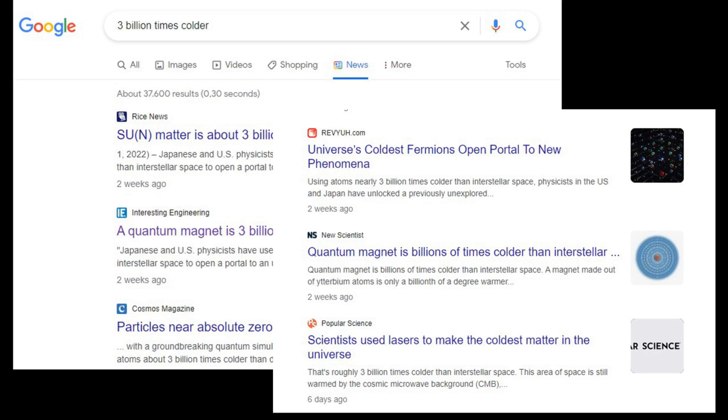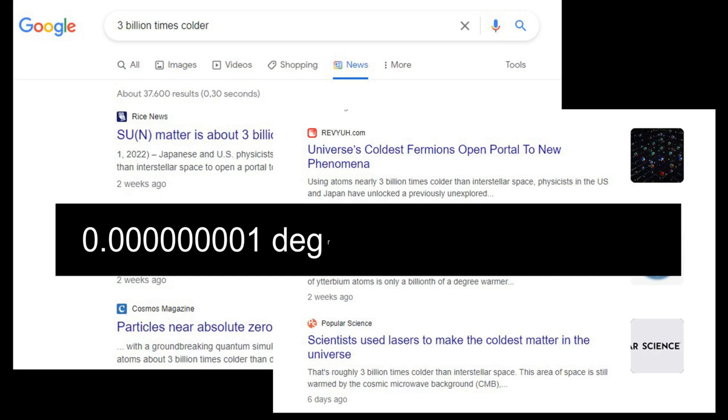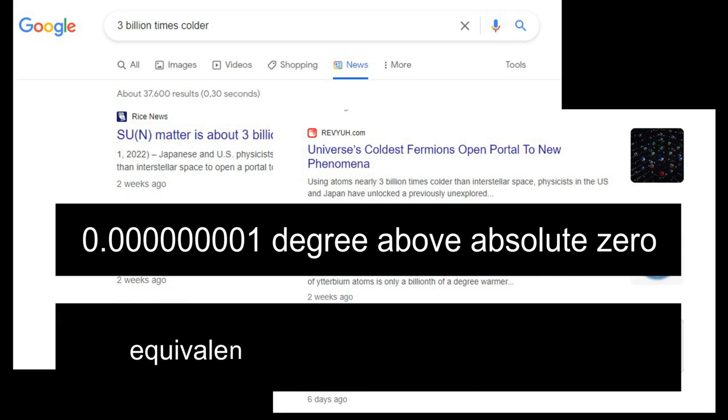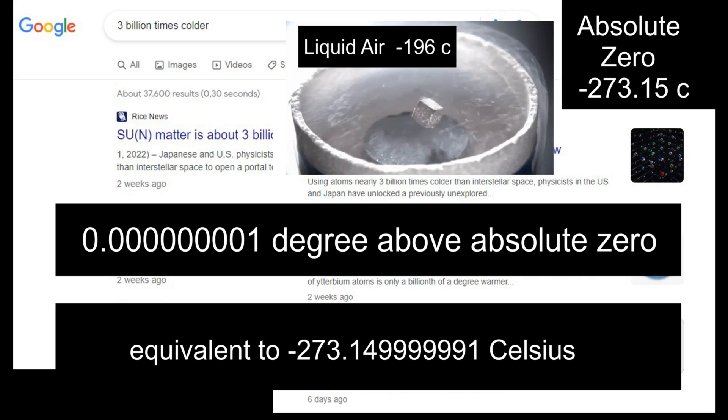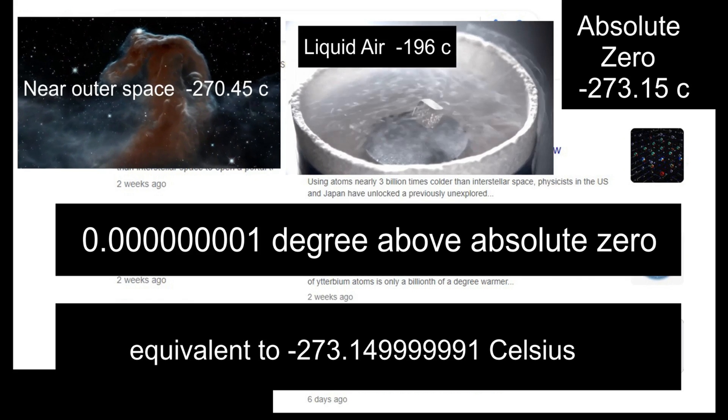The achieved supercooling announced means reaching a temperature just 0.000000001 degree above absolute zero, or minus 273.149999991 Celsius. What's the problem in reaching almost minus 273.15 Celsius? Liquid air is minus 196 Celsius. Near outer space is already minus 270.45 Celsius. Is it such a problem to cool another 2.7 degrees?